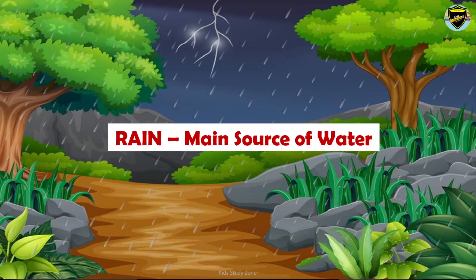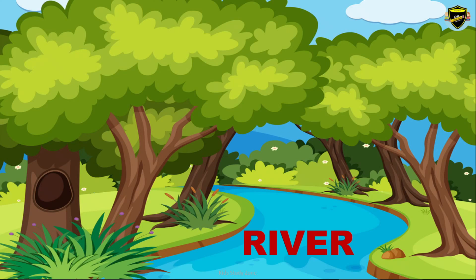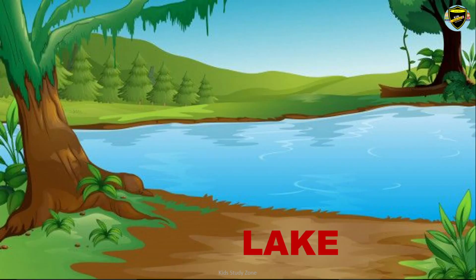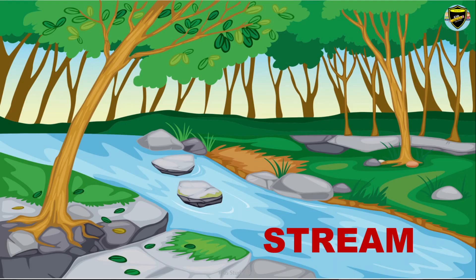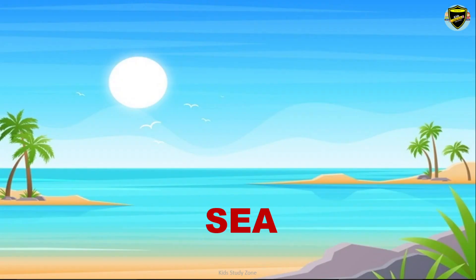Natural sources of water: rain is the main source of water. It collects water in the different water bodies, namely river, lake, pond, stream, and sea. These all are the natural sources of water which are available naturally.